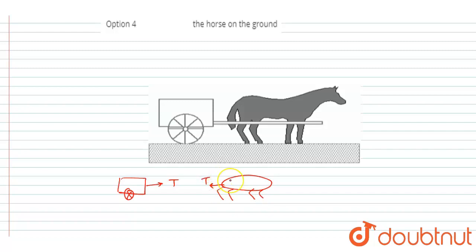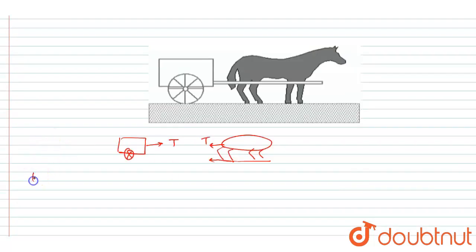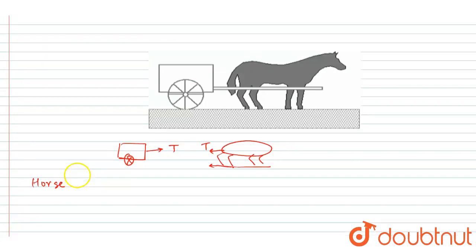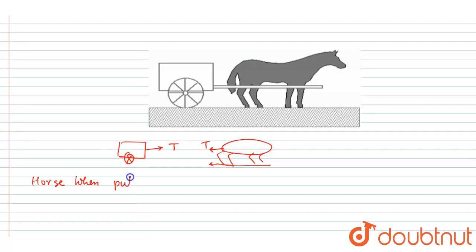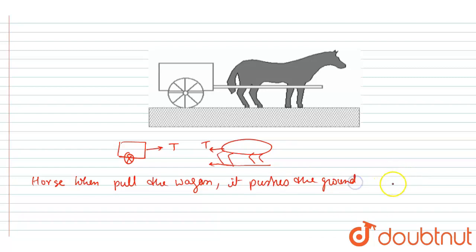Now if we talk about the horse, the horse is acted on by the same force T in the backward direction. The horse is pushing the wagon in the forward direction by pushing the ground in the backward direction. Since the horse wants to pull the wagon forward, it pushes the ground in the backward direction.